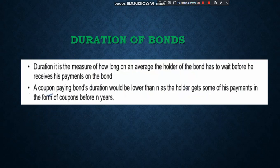Duration of Bonds is the definition of how long on average the holder of a bond has to wait before he receives his payment on the bond. If you have a bond, you will receive a coupon or interest. You have to consider how long you wait — based on the bond price and annual cash flows — to receive the coupon payments and the final principal amount.